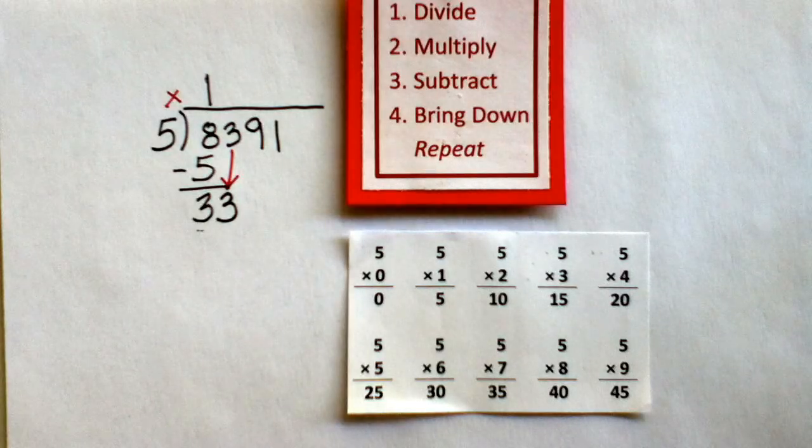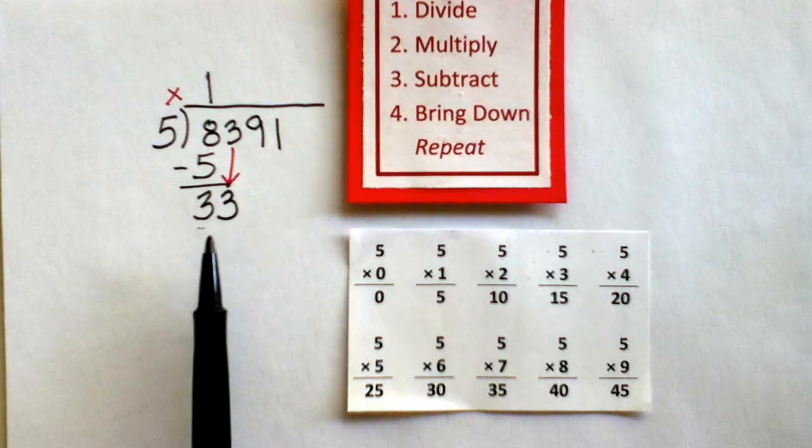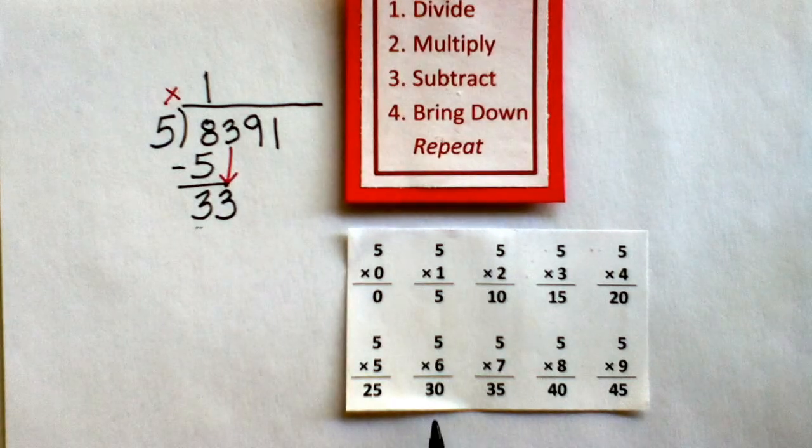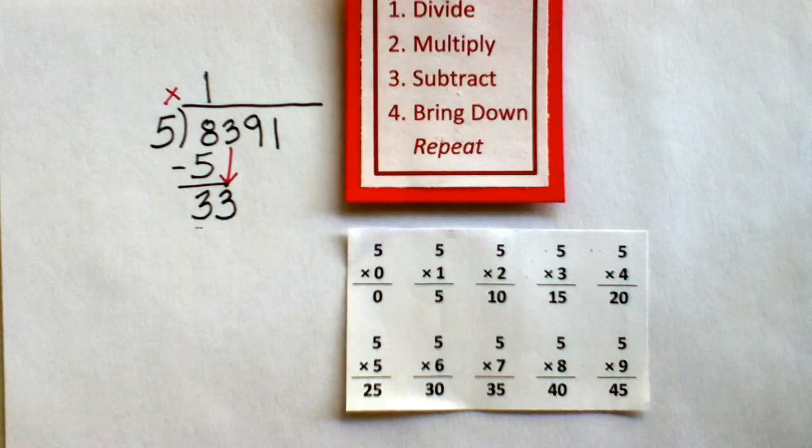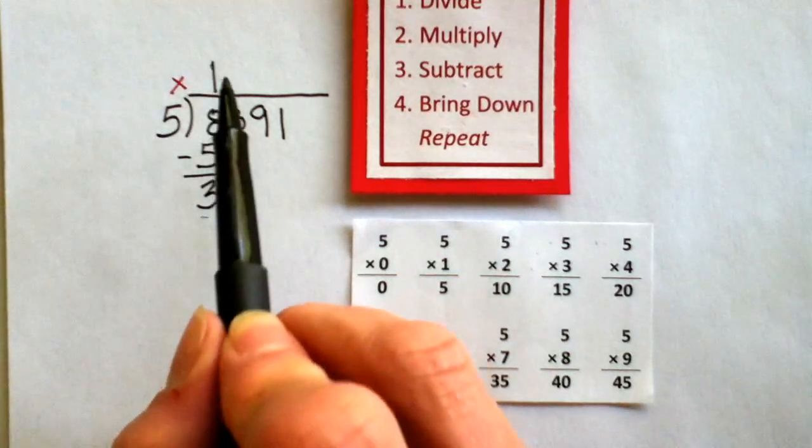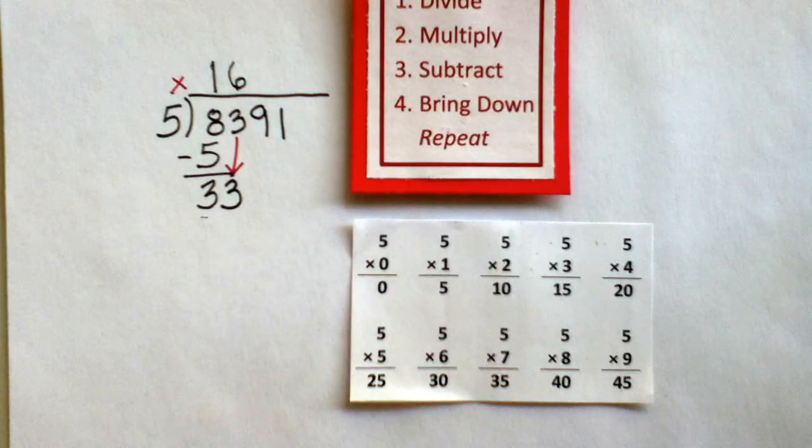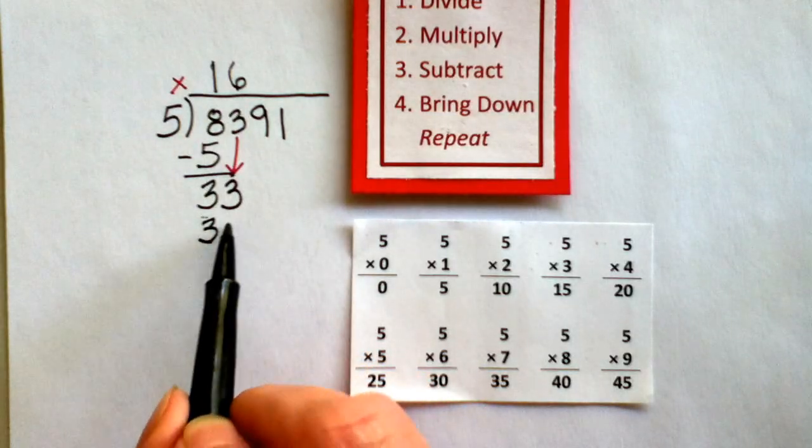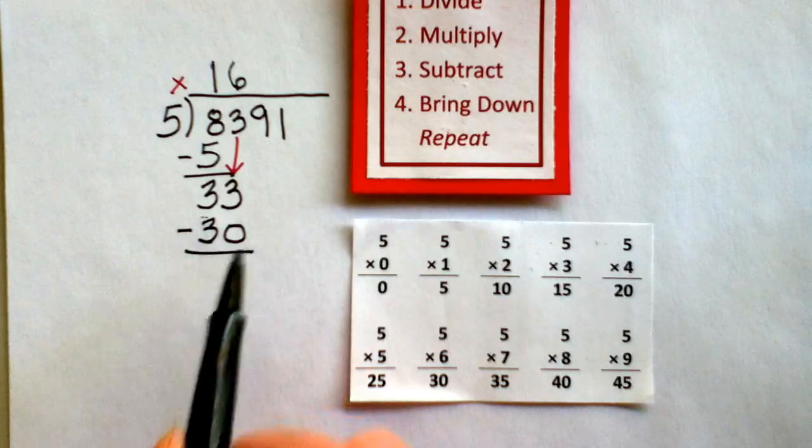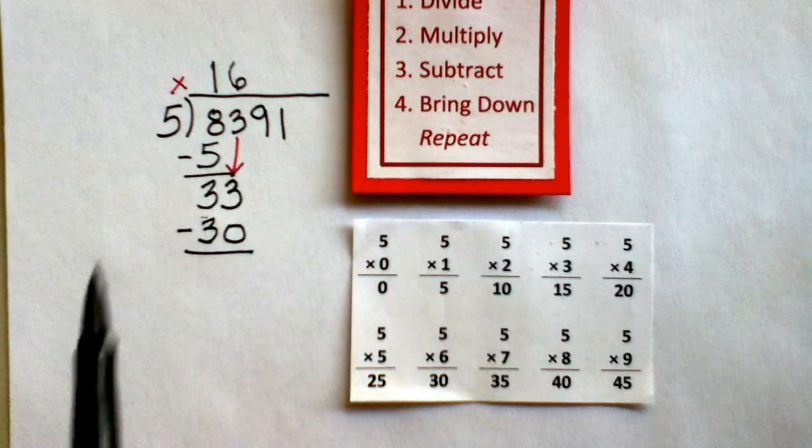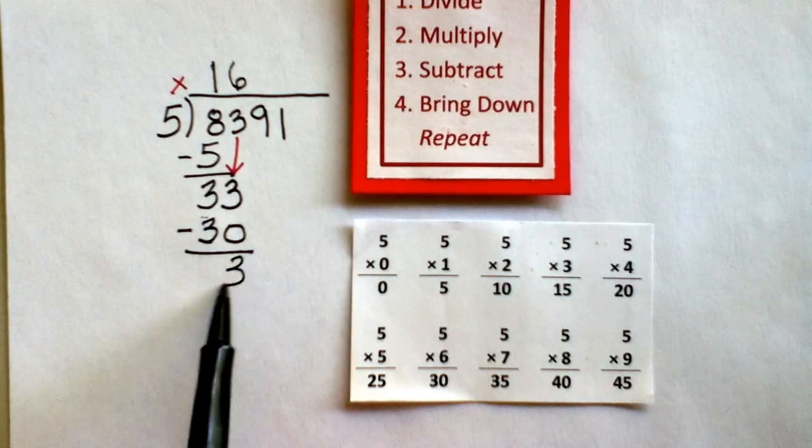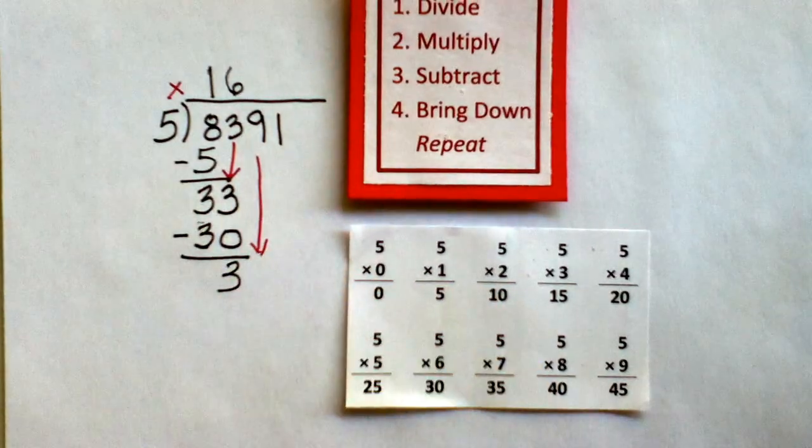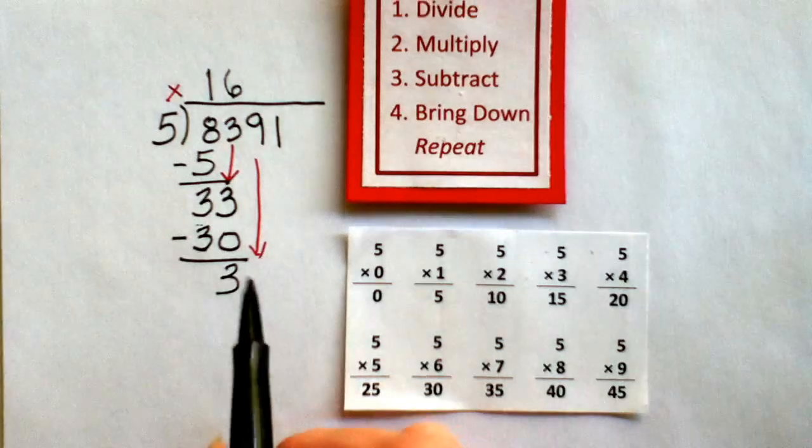So I'm looking for that number that gets as close as possible to the 33 without going over. And I see that 5 times 6 is 30, and that's the closest I can get. So I write a 6 up top. Second step, multiply. 6 times 5 is 30. Third step, subtract. 33 minus 30 is 3. Fourth step, bring down. I bring down the next number, number 9.